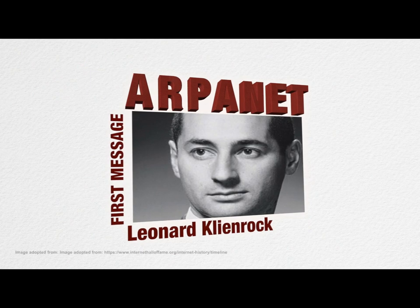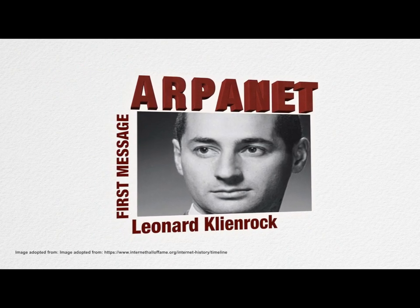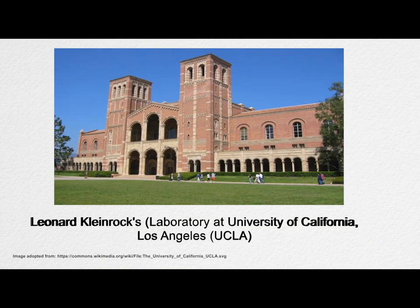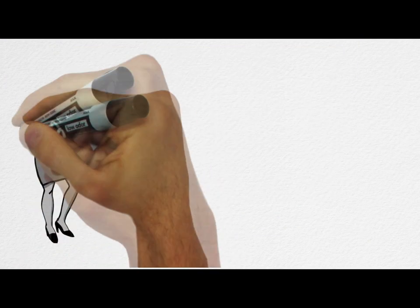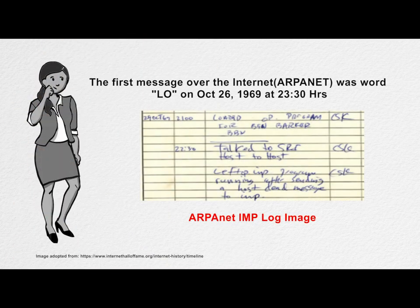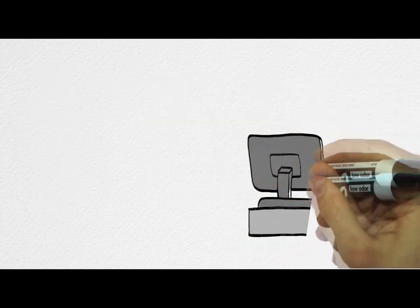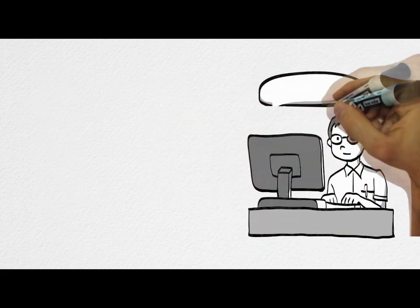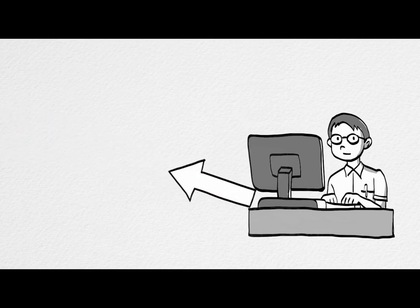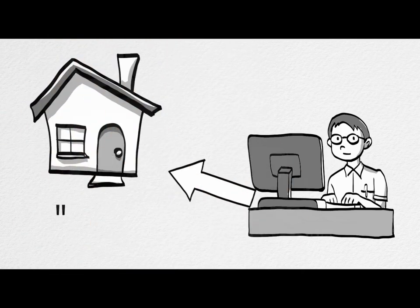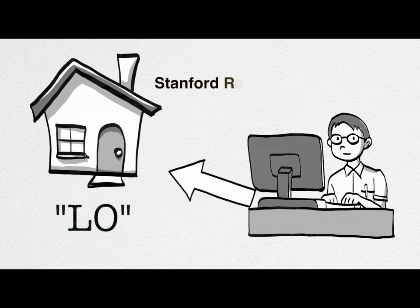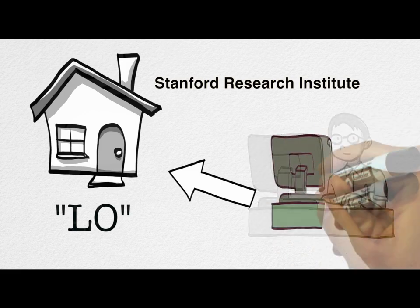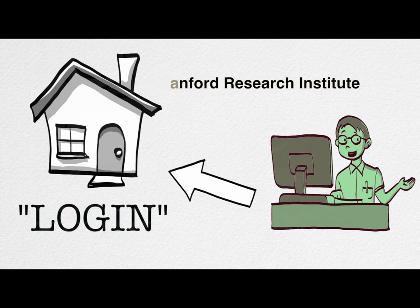The first message was sent over ARPANET, a packet switching network, by Leonard Kleinrock's Laboratory at University of California, Los Angeles. You will be surprised to know that the first message sent over the internet was the letters L-O. They intended to send the word 'login,' but only the first two letters reached their destination at the second network node at Stanford Research Institute, and before the last three letters could reach the destination, the network was down due to a glitch. Soon the error was fixed and the message was resent.